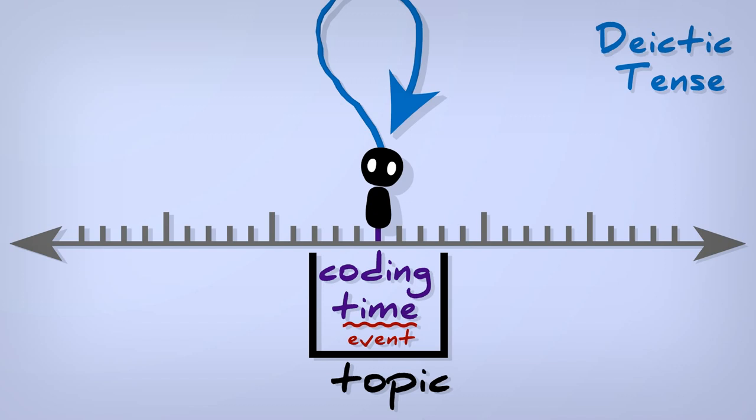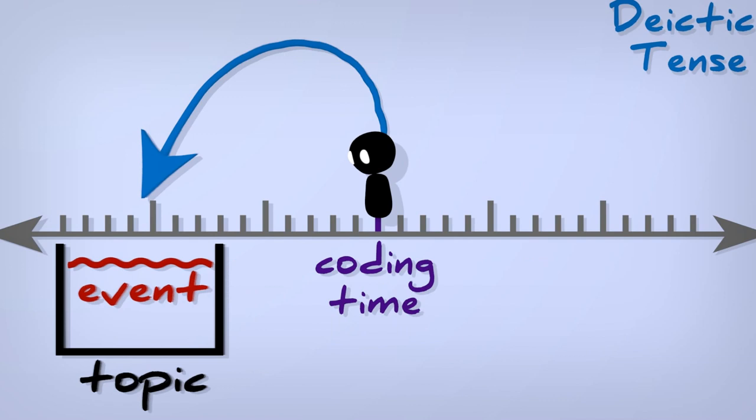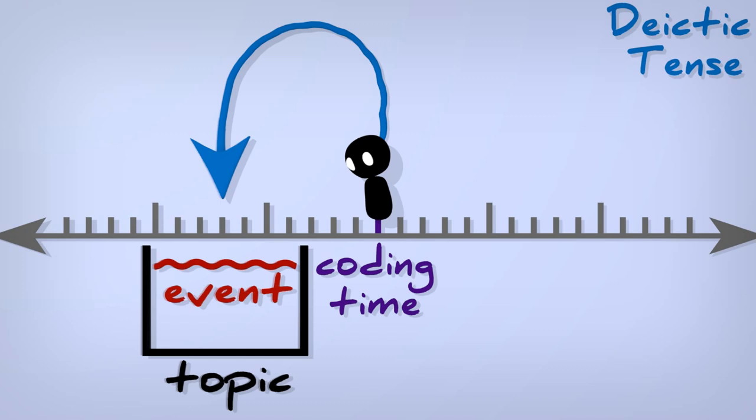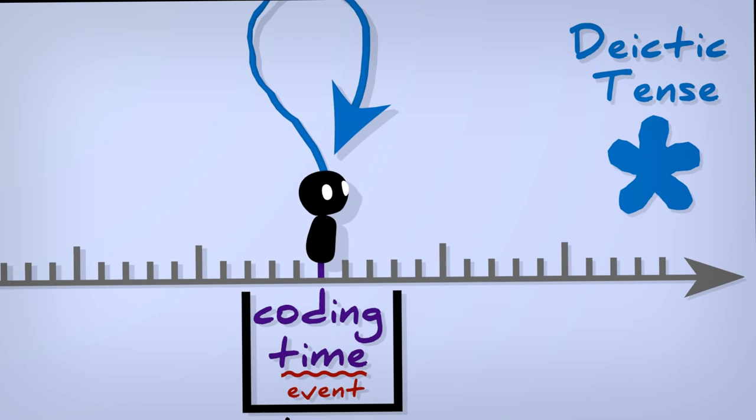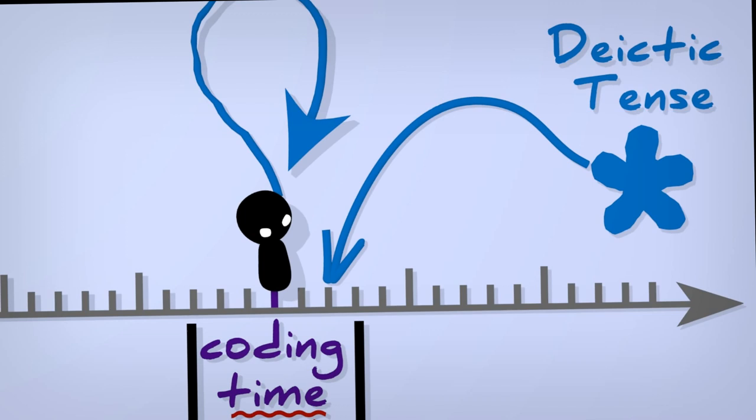Languages can divide this up differently, combining tenses into future versus non-future, or past versus non-past, but tenses point from coding times to topic times. A big asterisk here, because there absolutely are relative tenses that point from somewhen other than coding time, like if I say, you will realize you already knew, the past knew points back from some time in the future, but it's still deictic.